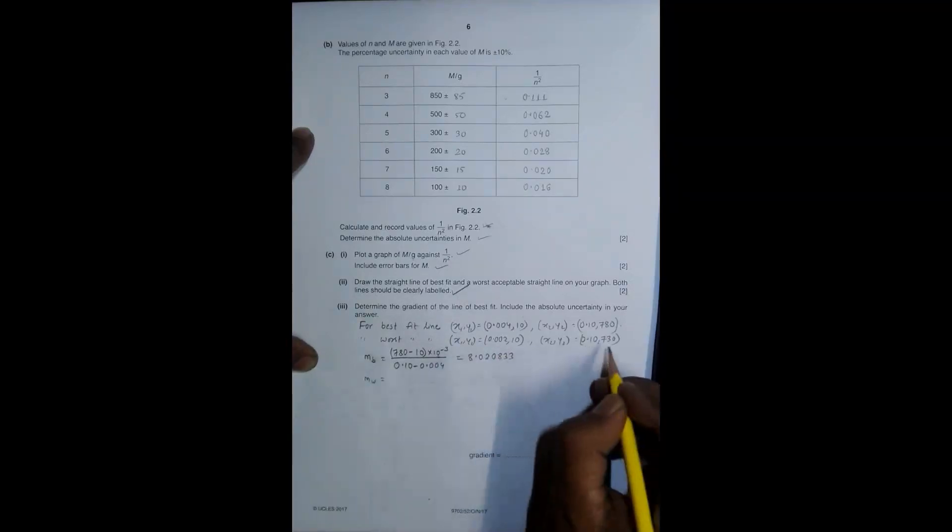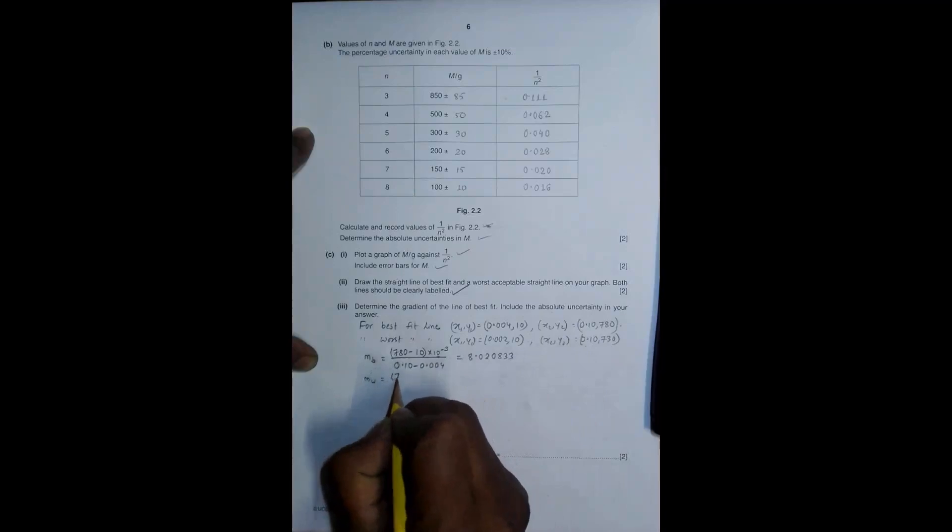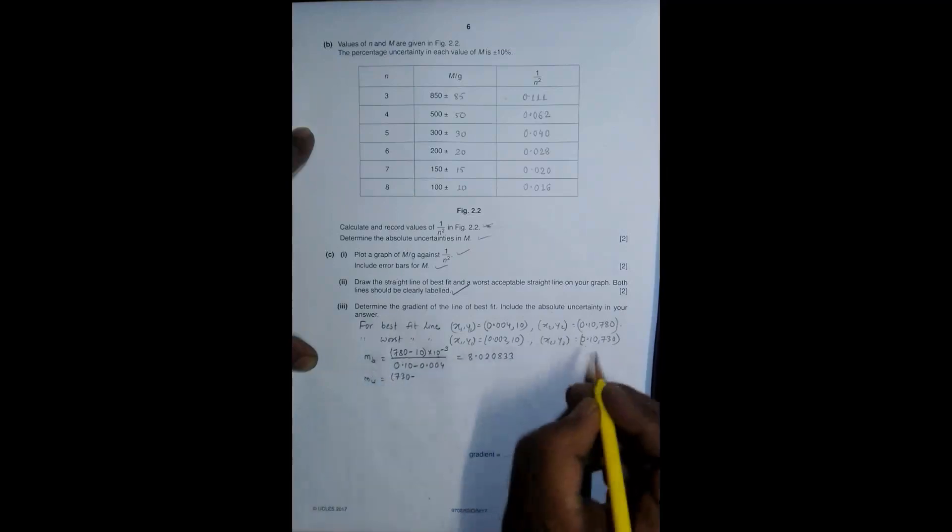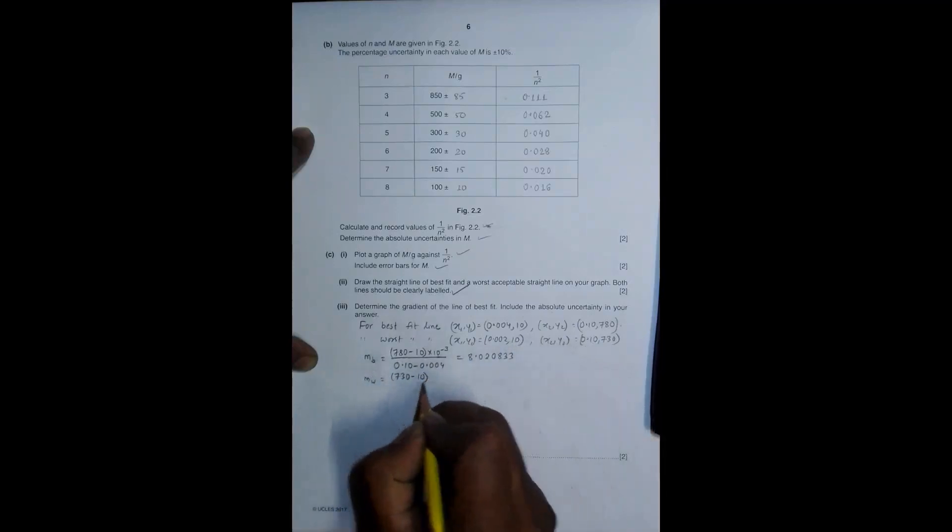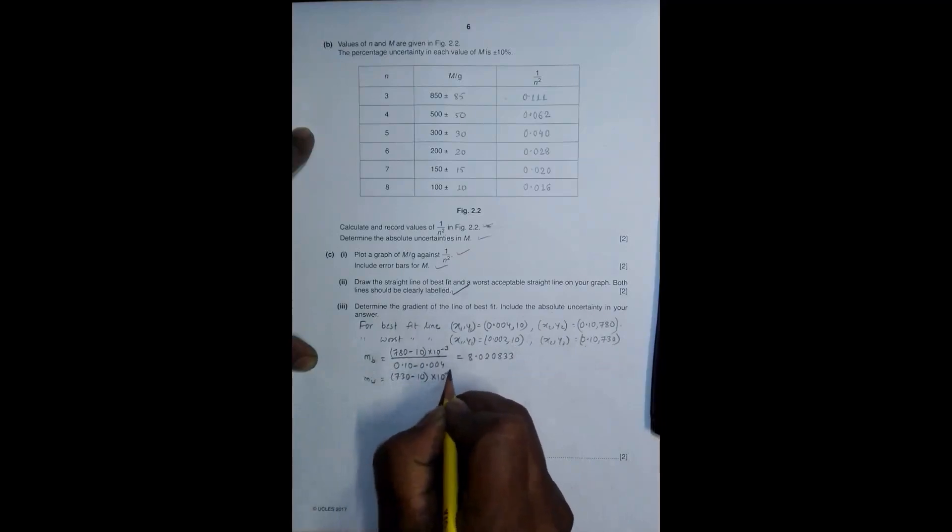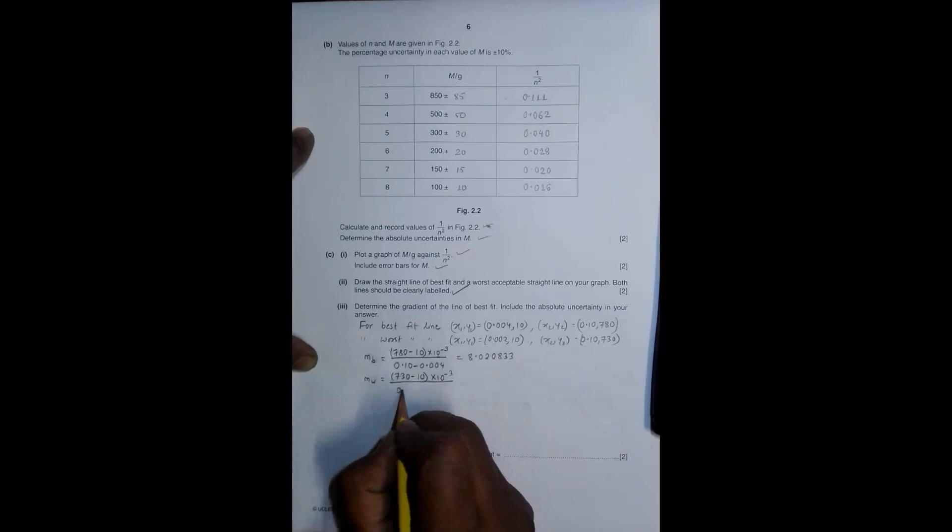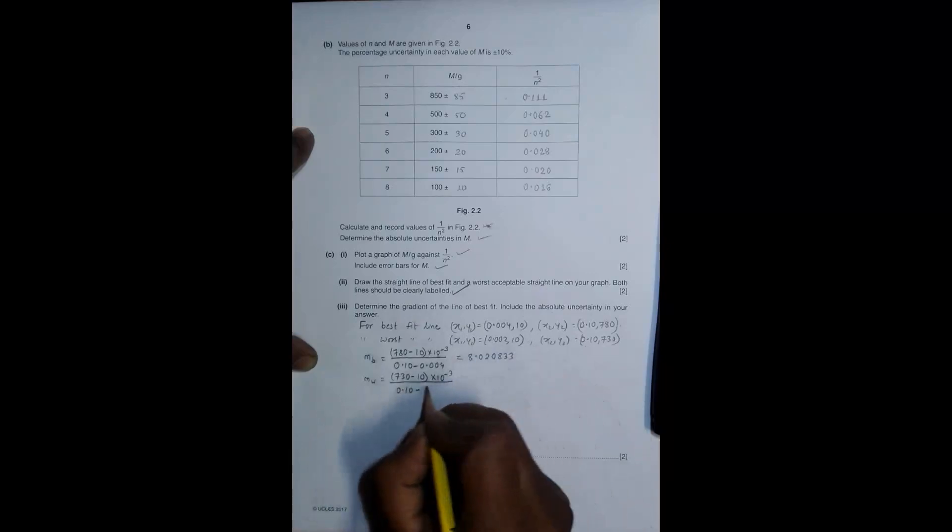M worst will be equal to, so m worst will be equal to, x2 is 730 minus, it's again 10 here, 10 into 10 to the power minus 3. So divide it by 0.10 minus,